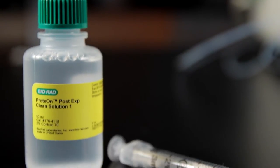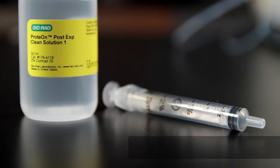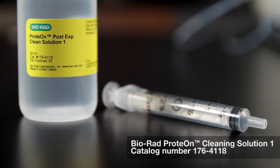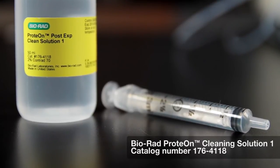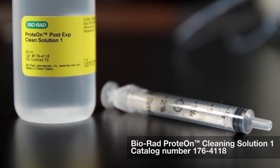If you see any cracks in the flow cell, you should replace the flow cell before proceeding. Prepare a solution of 2% Contrad detergent or use Bio-Rad Proteon Cleaning Solution 1, which is catalog number 176-4118.